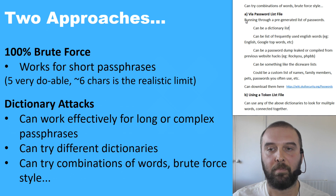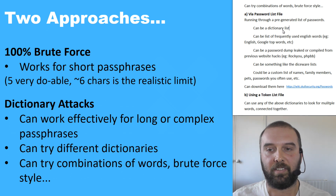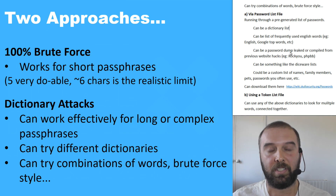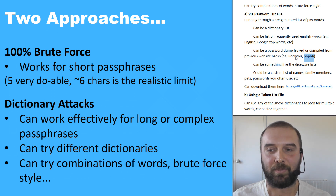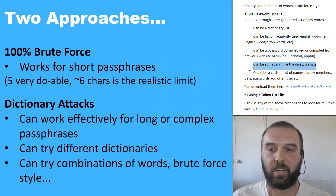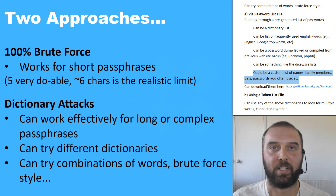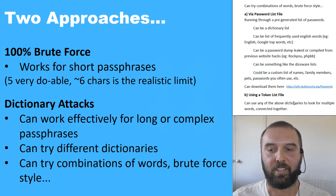The first dictionary method is a password list file that runs through the dictionary from start to finish. It could be a standard dictionary, a list of frequently used English words, or a password dump leaked from previous website hacks — like the rockyou list or phpbb list. These are really useful because they contain passwords people commonly pick. You could also use diceware lists, or make a custom list of names, family members, pets, and passwords you often use.